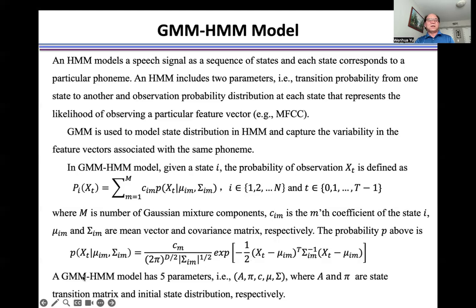A GMM-HMM model has five parameters, where A and π are state transition matrix and the initial state distribution respectively.